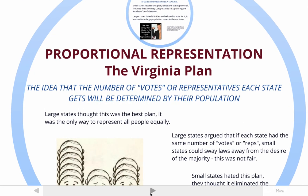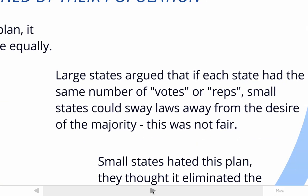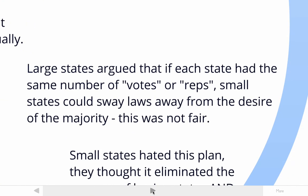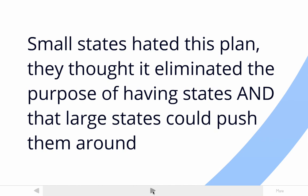Proportional representation was called the Virginia Plan at the convention. The delegates from Virginia put this plan forward, and the large states supported it. The Virginia Plan proposed that the number of votes or representatives in government would be based on a state's population — the larger the population, the more votes the state would get. Large states thought this was the only way to represent all people equally. If small states had equal votes to large states, that would give smaller states an unfair advantage. Large states argued representation had to be based on population, or otherwise it wouldn't be fair. The small states absolutely hated this plan — they thought it eliminated the states and gave large states too much power.